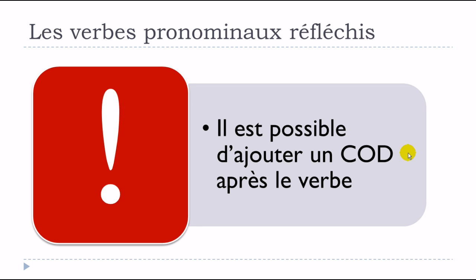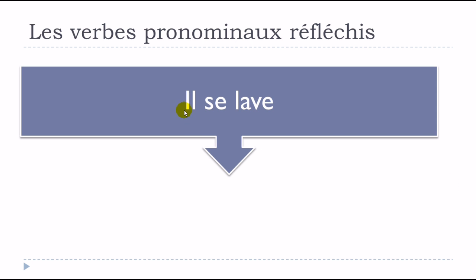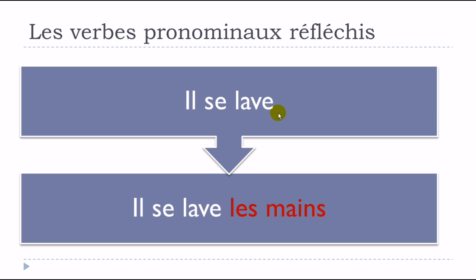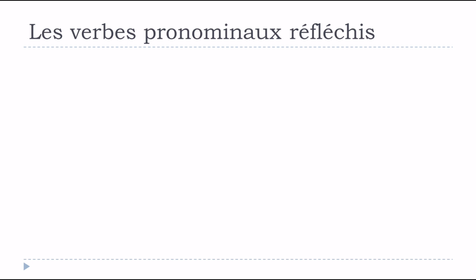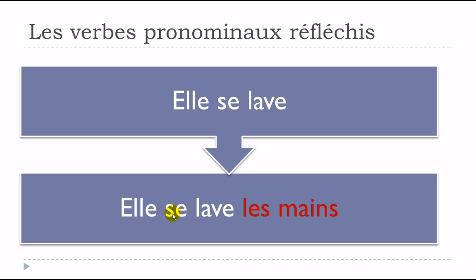An important point: it is possible to add a complément d'objet direct after a pronominal réfléchi verb. For example: il se lave — you can be more precise about what part of the body he's washing. So you say il se lave les mains. This way you specify what he is washing, which wasn't clear with just il se lave.